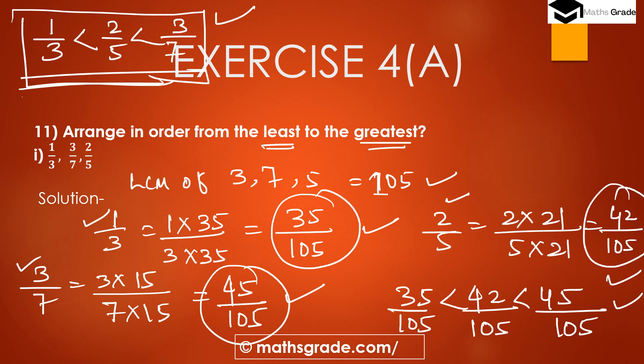When arranging rational numbers in ascending order — smallest to greatest — first find the LCM of the denominators, then convert all rational numbers into equivalent rational numbers by equating denominators to the LCM, multiplying the same number with both numerator and denominator. Then compare the numerators: smallest numerator is the smallest rational number, greatest numerator is the greatest rational number.